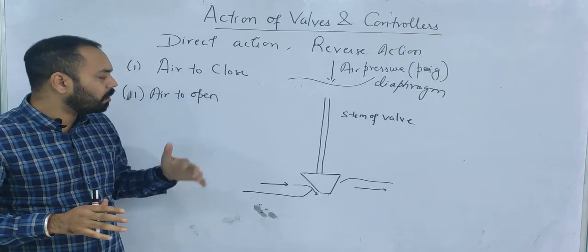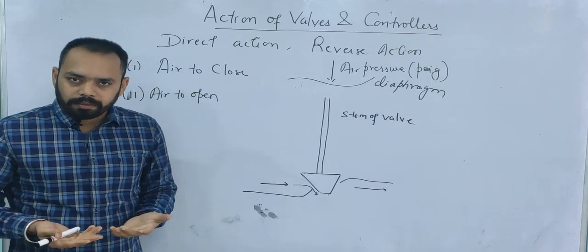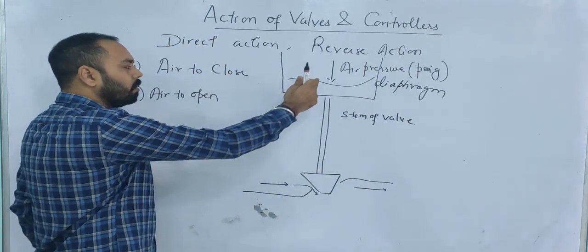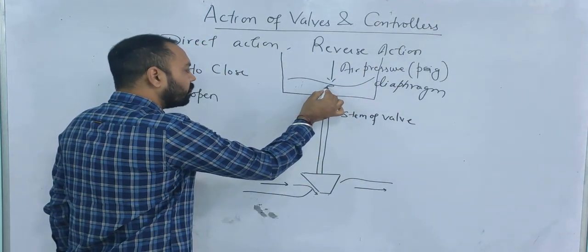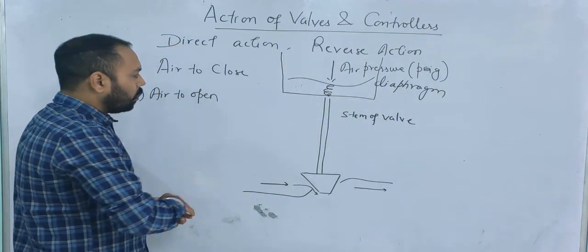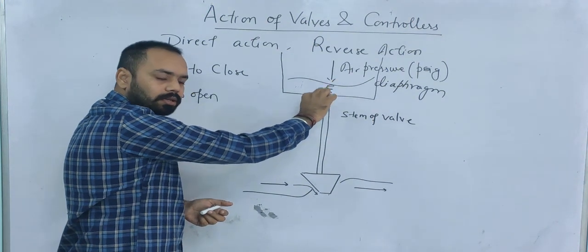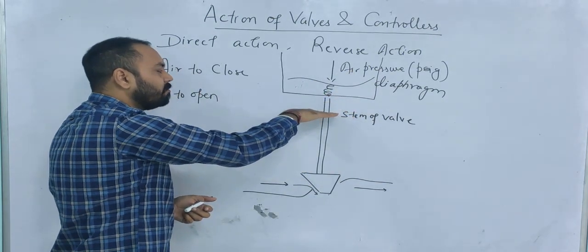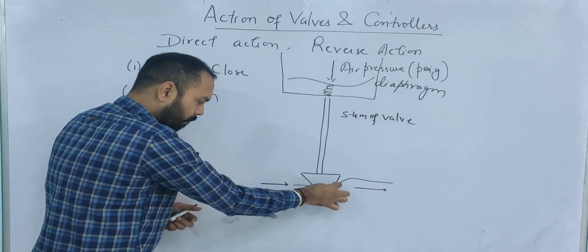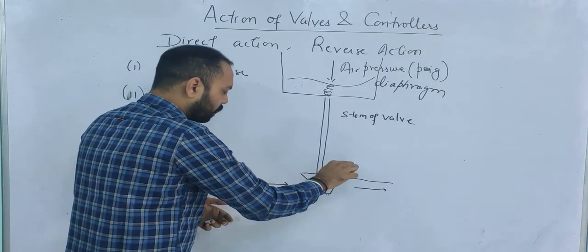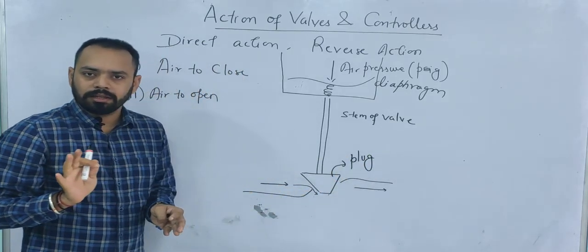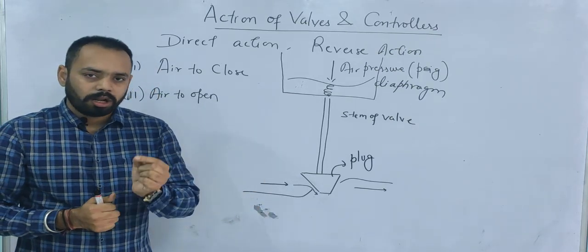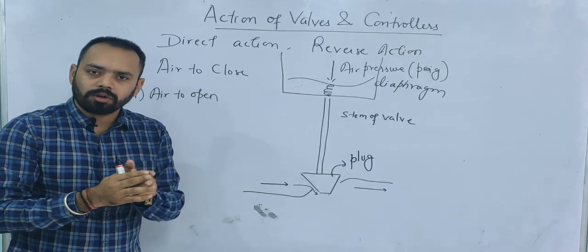Whether a valve acts as air-to-close or air-to-open depends on the position of the spring. Suppose the air pressure is applied from the top and the spring is present below. As the air pressure increases, the spring gets compressed and the valve will be closed. If the air pressure is at its maximum value, the stem moves maximally downward and the gap is completely filled with the plug — resulting in zero flow through the valve.